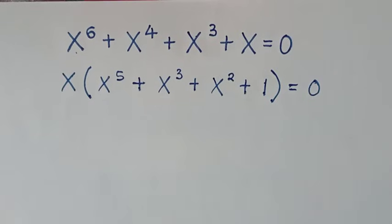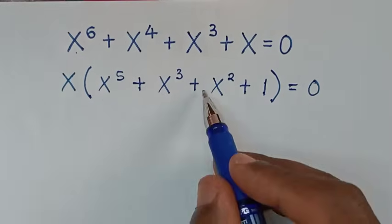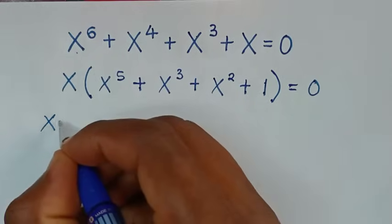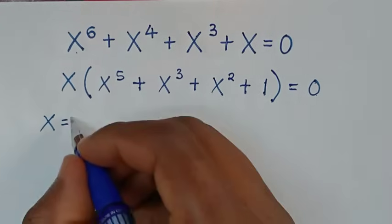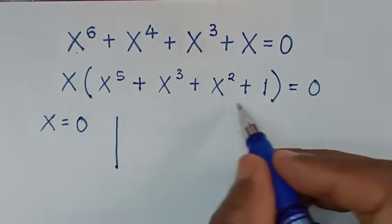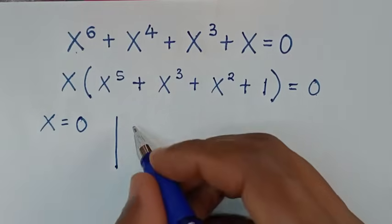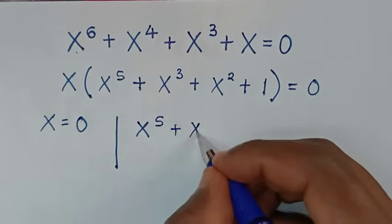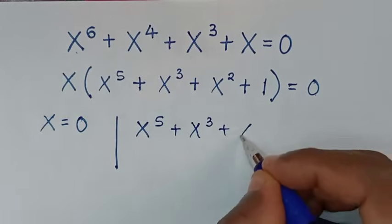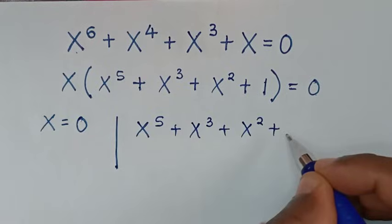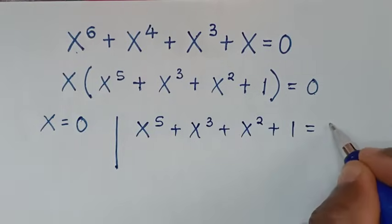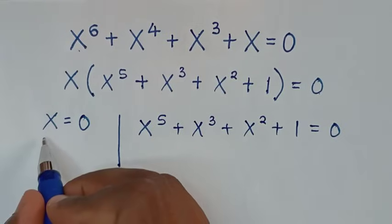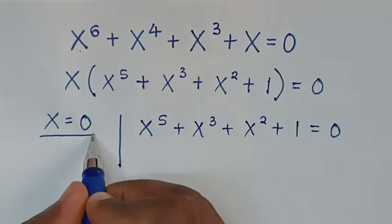Then in the next step from here we have two solutions. The first solution is x is equal to 0, and the second solution is the inside of the bracket which is x power 5 plus x power 3 plus x power 2 plus 1 is equal to 0. From here we already get one of the values of x, which is x is equal to 0.